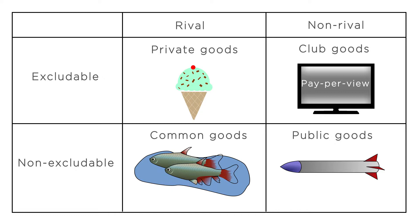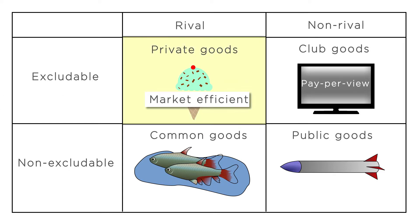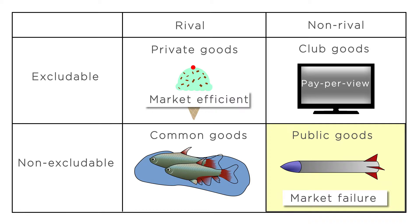So why do we care about the difference between private goods and public goods? Because the market is only able to efficiently provide private goods. There is a market failure in the provision of public goods, and the private market will under-provide these goods. The logic is the same as it was for a positive externality: when you provide a public good, lots of people benefit, but you don't see that benefit, even though you're the one providing the good. So how do we determine how much of a public good should be produced?